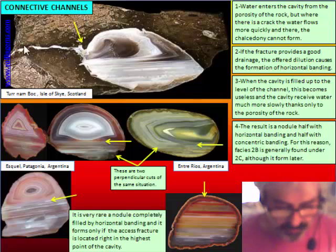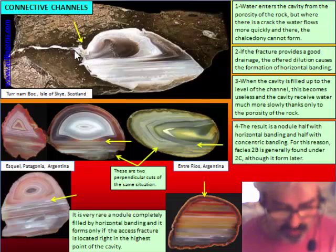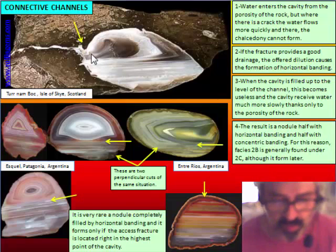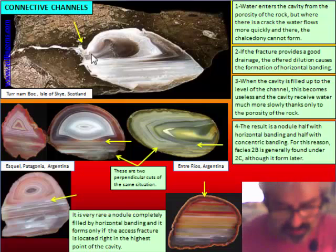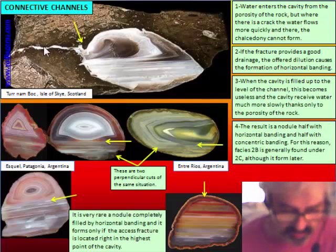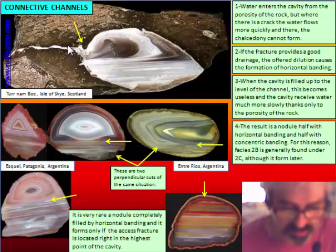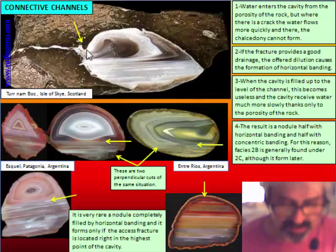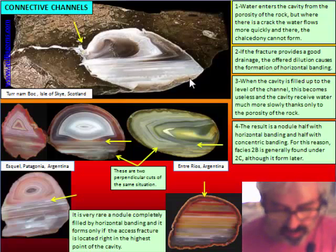If the fracture is responsible for the faster entry of water from each side, this is the place where the interruption of the band will be located. We can have an interruption or a channel depending on the size of the fracture and the quantity of water entering from this point, but we can never accumulate chalcedony here because it is the only place where the rapid input of water will remove the chalcedony. This dilution, provoked by the access of water from the fracture, is responsible for the horizontal banding we can see here.